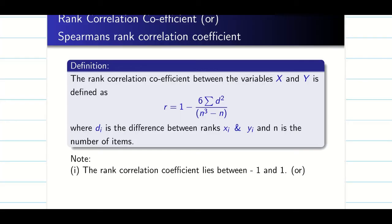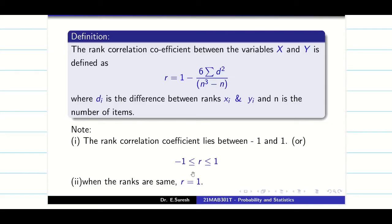So here also the correlation lies between minus 1 to 1. When the ranks are same, we say r is equal to 1.